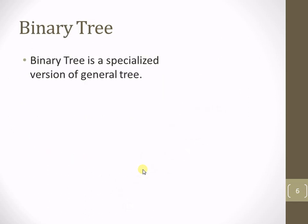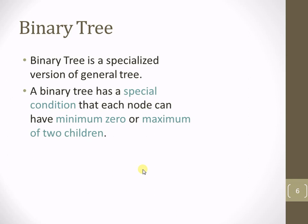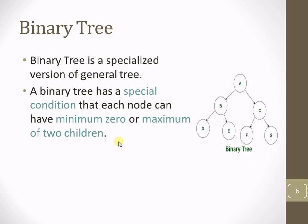Now let's move to the binary tree. A binary tree is also a non-linear data structure, but it is a specialized version of the general tree. The special condition is that for every parent node there are minimum 0 or maximum 2 child nodes. The restriction on the maximum number of child nodes is 2. That is why the name is binary — binary means 2. So maximum 2 children can exist for every parent node: either 0, 1, or maximum 2. This is shown in the example of the binary tree where every node has at most 2 child nodes.